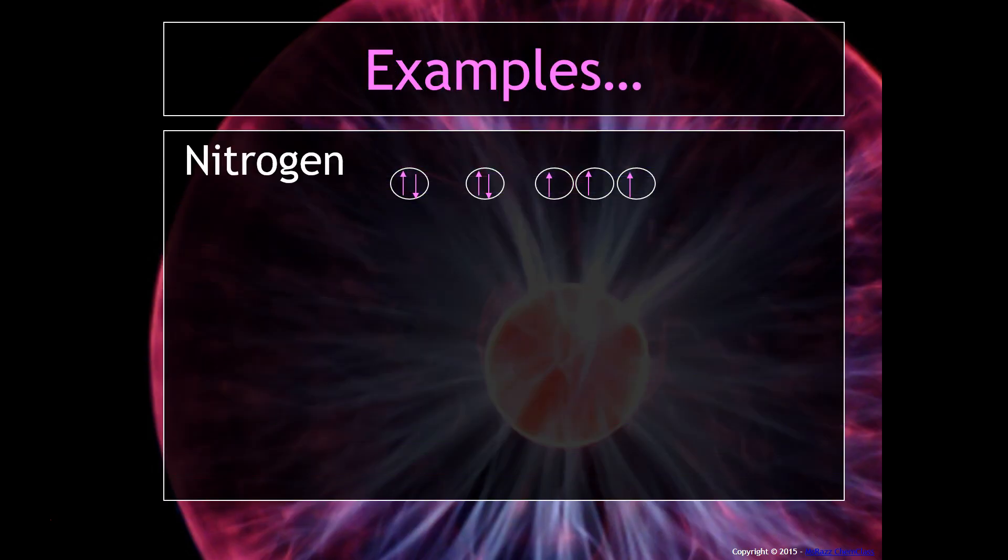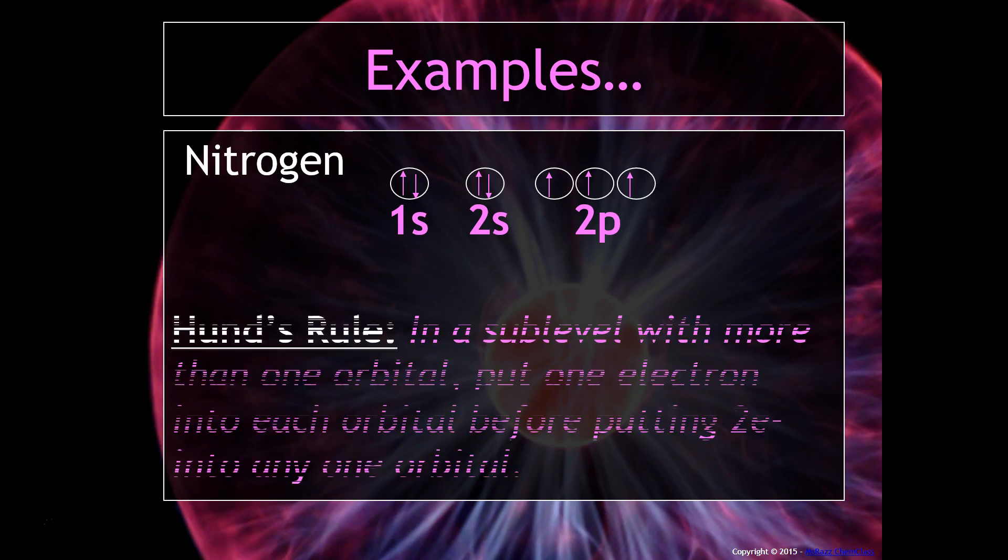Here's another example, nitrogen. It has seven electrons and you may notice that we go from 1s to 2s and then when we go to 2p you may wonder, why are they all going up?